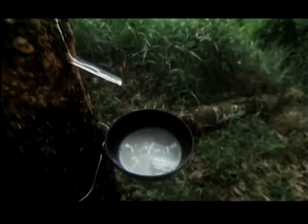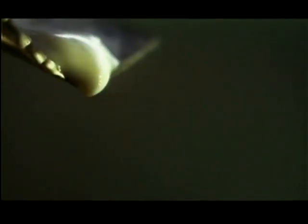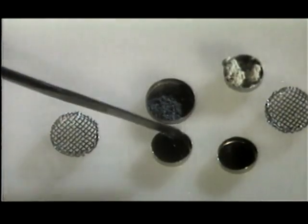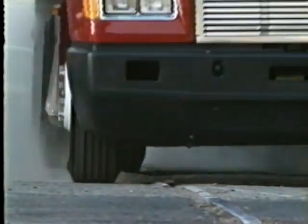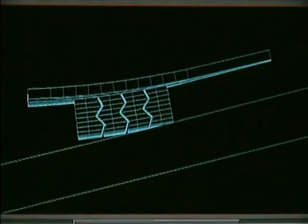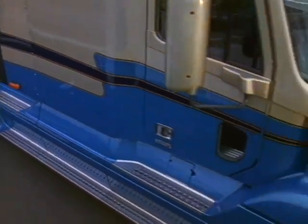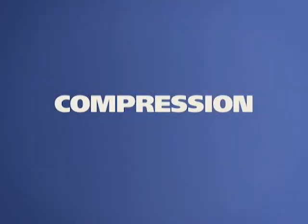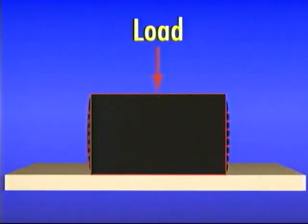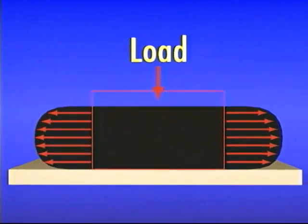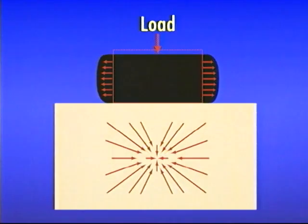The wear created by the physical properties of rubber is more complex. There are several factors to be considered here. As a tire rotates and comes in contact with the road, the tire — a round object — must change its shape to match the surface of the road, a flat object. Let's examine the components of this process. Compression: as a load is applied to a tire, the tread rubber in contact with the road is compressed.